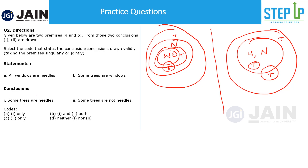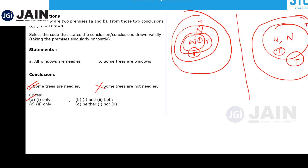Can we conclude 'some trees are needles'? Checking all possible cases — in each arrangement of trees and windows merged with the needles diagrams — some trees are needles holds true in all cases. Therefore it is a correct conclusion. Can we say 'some trees are not needles'? In the minimum overlap case it may seem true, but when trees are fully inside needles it is not true. Since it fails in at least one case, only statement one follows.